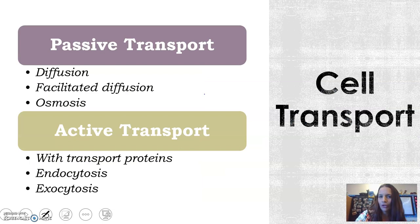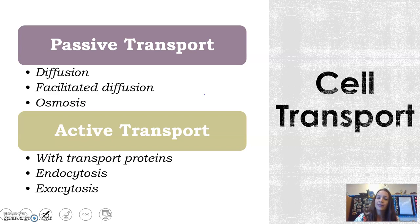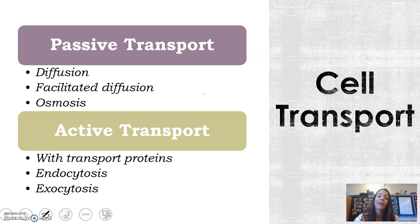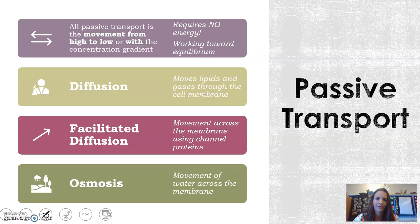Now that we've learned about the cell membrane, it's time to get into transport and how it happens across the membrane. There are two kinds: passive and active. Passive includes diffusion, facilitated diffusion, and osmosis. Active includes transport proteins, and then endocytosis and exocytosis.